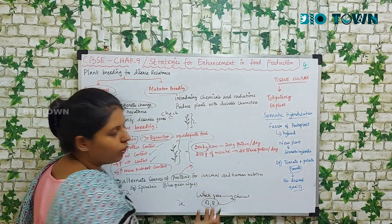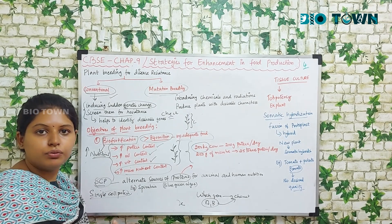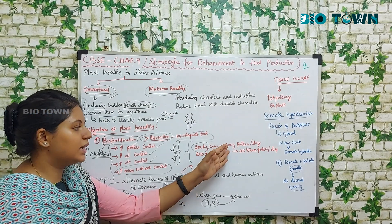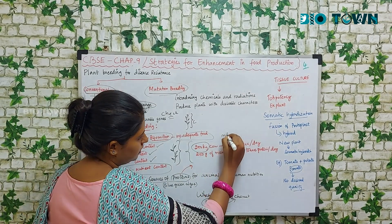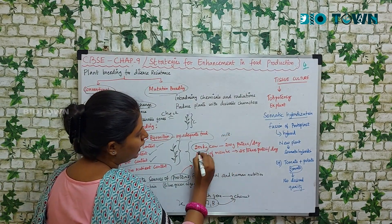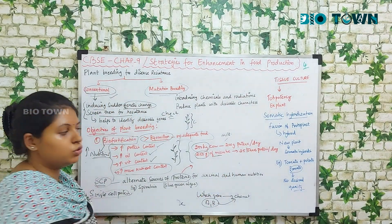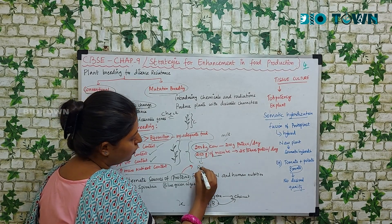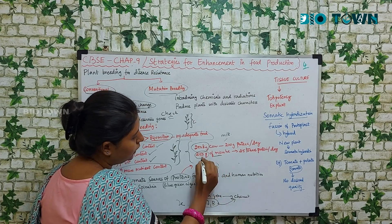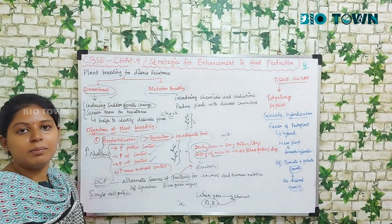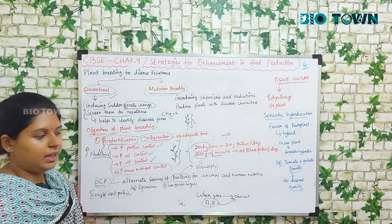A 250 kg cow — a female cow weighing 250 kg — is able to secrete only 200 grams of protein through its milk. But 250 kg of microbes are able to produce 25 tons of protein. Why? Because these microbes tend to multiply. So that is why 250 kg of microbes are able to produce 25 tons of proteins per day.